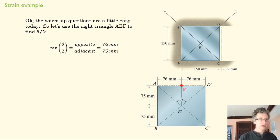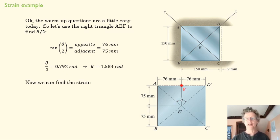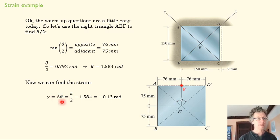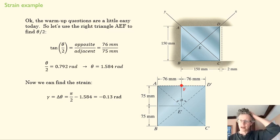I want to find half of theta, this angle here. Tangent of that is opposite, 76, over adjacent, which remains 75. I can find that that's 1.584 radians. Then we can find the strain. It's delta theta: pi over 2, which is my original theta, minus this new theta. I get a value in radians here—it's an angle. That is the way we express our shear strain.